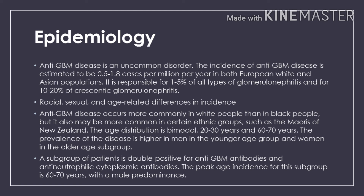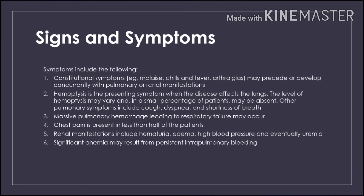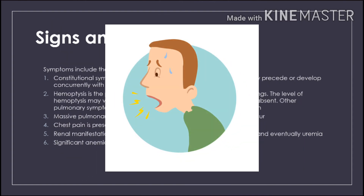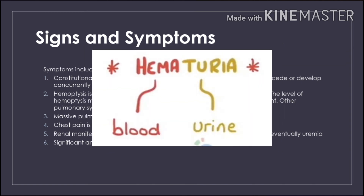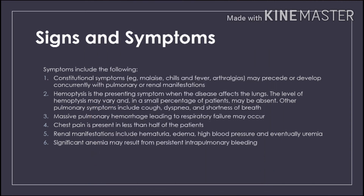For the signs and symptoms: constitutional symptoms like malaise, chills, and fever and arthralgias may precede or develop concurrently with pulmonary or renal manifestations. Hemoptysis is a presenting symptom when the disease affects the lungs, though it may vary in level or be absent in a small percentage of patients. Other pulmonary symptoms include cough, dyspnea, and shortness of breath. Massive pulmonary hemorrhage leading to respiratory failure may occur, and chest pain is present in less than half of patients. Renal manifestations include hematuria, edema, high blood pressure, and eventually uremia. Significant anemia may result from persistent intrapulmonary bleeding.